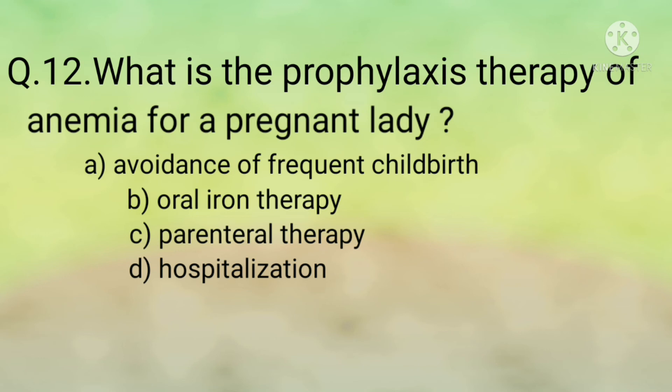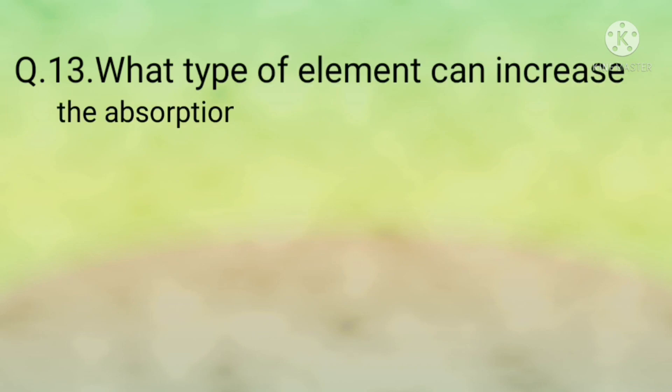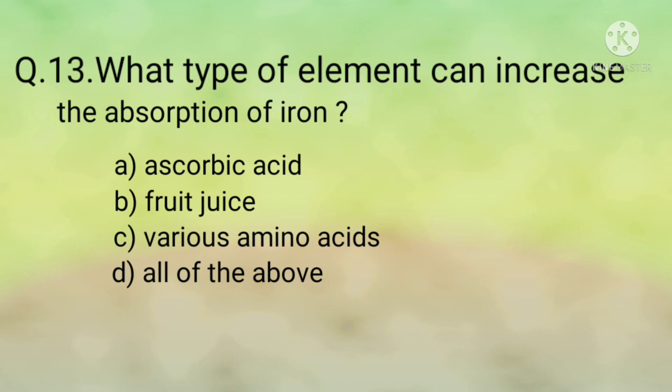Question number twelve: Options are: option A, avoidance of frequent delivery; option B, oral iron therapy; option C, parenteral therapy; option D, hospitalization. The correct option is option A, avoidance of frequent delivery. A minimum interval between pregnancies should be at least two years to replace the iron lost during the delivery process and lactation, and this can be achieved by using a proper birth spacing method.